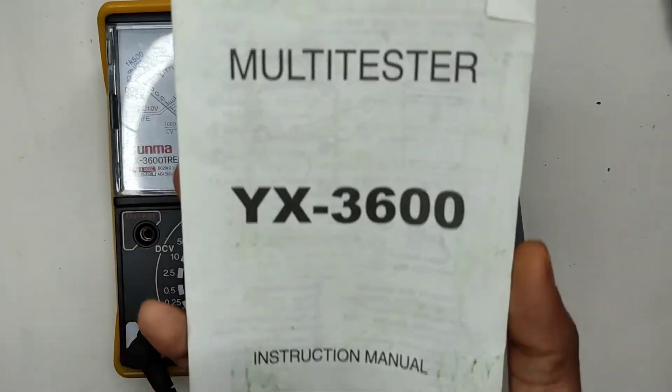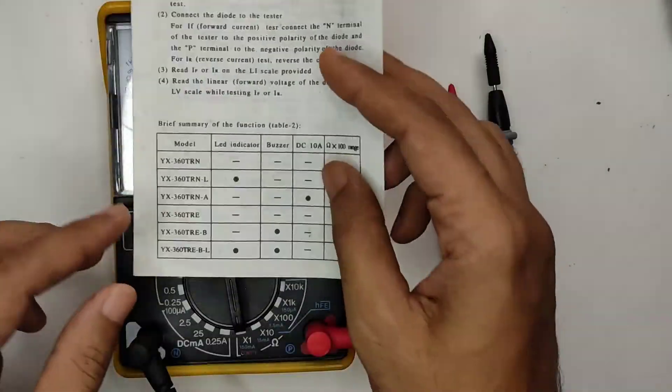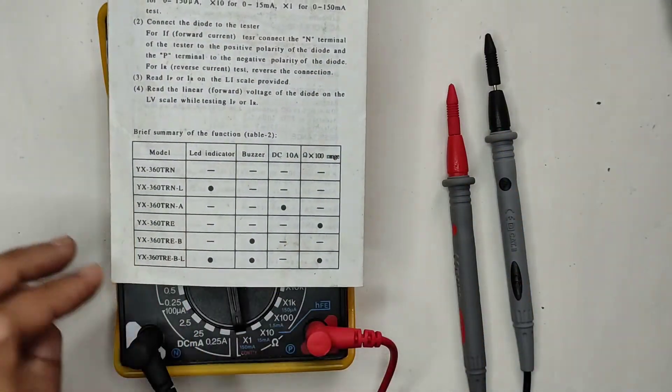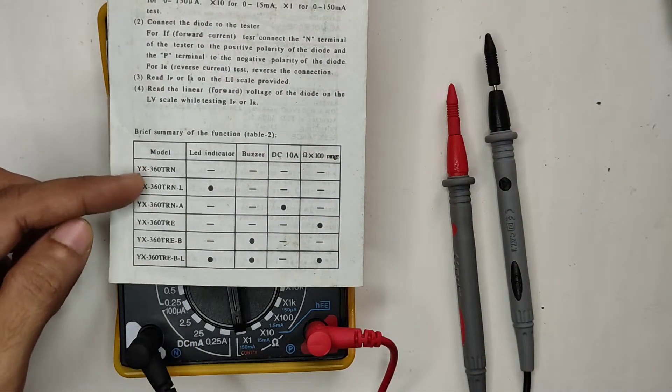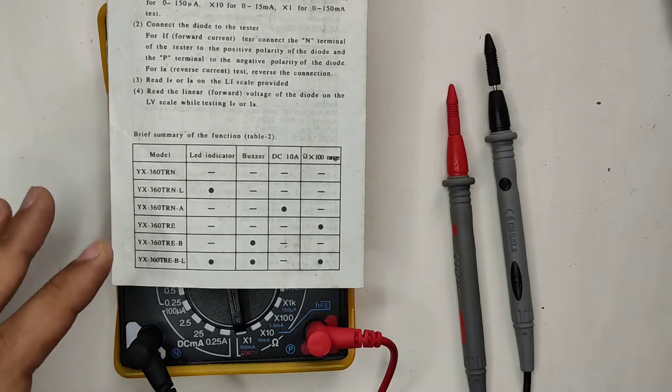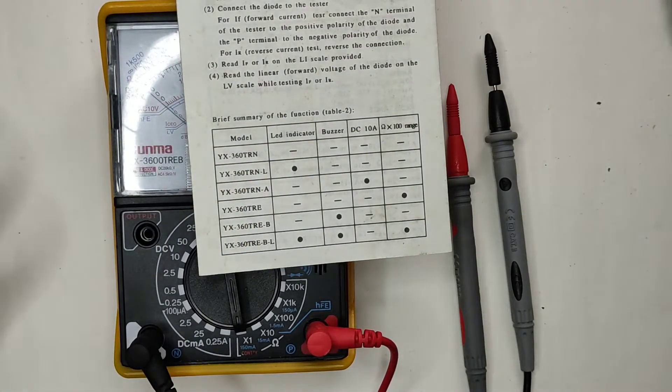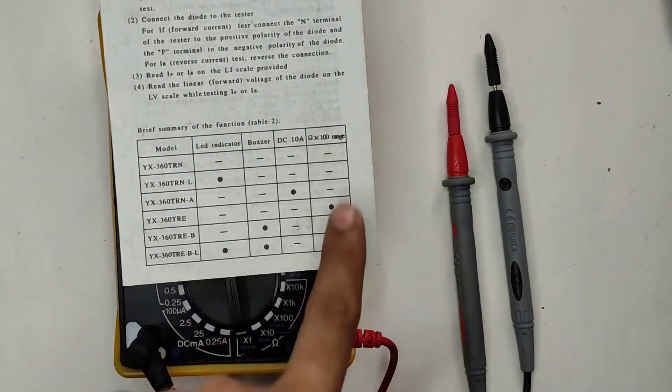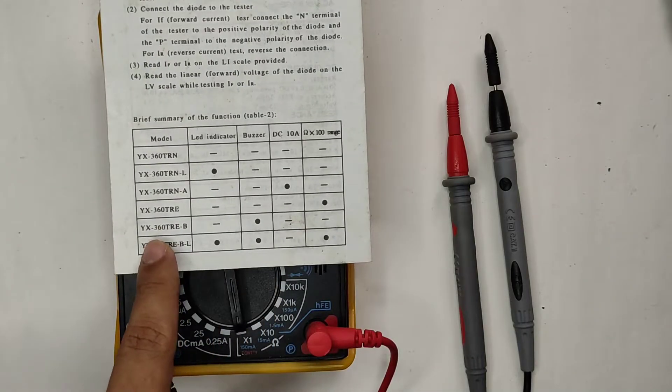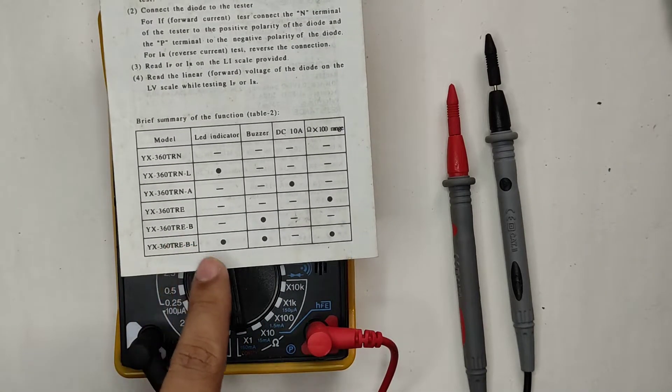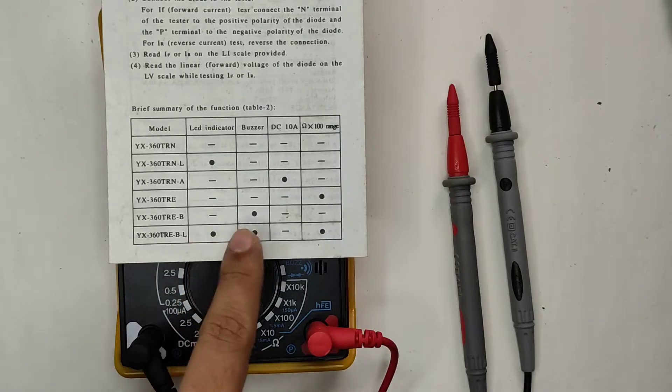This is the instruction manual that came with it. If I show you this, you can see there are one, two, three, four, five, six variants of this particular thing available in the market, and each one has different features. Ours is this one, 360 TREB.